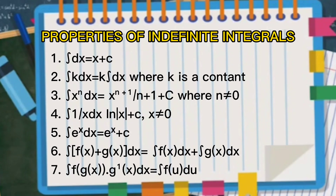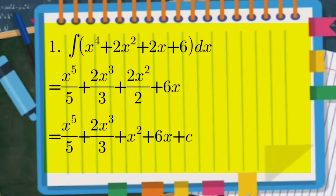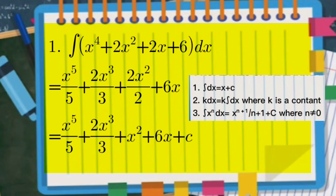Example number one: we have the integral of x to the power of four plus two x squared plus two x plus six dx. We will use properties number one, number two, and number three to solve this. In accordance with property number one, the integral of dx is equal to x plus C.